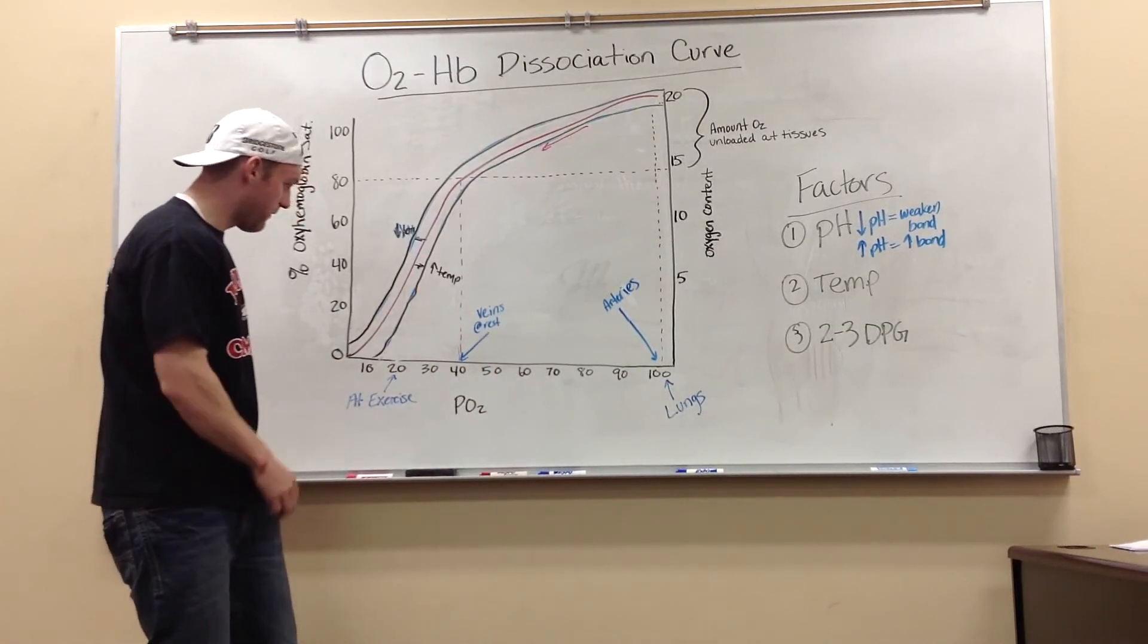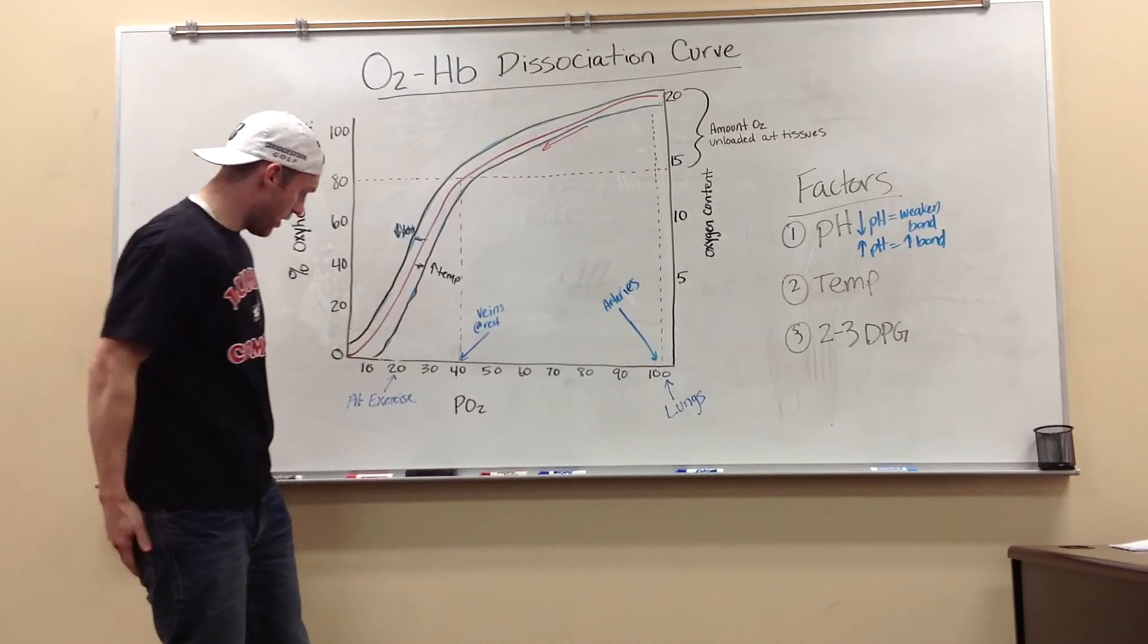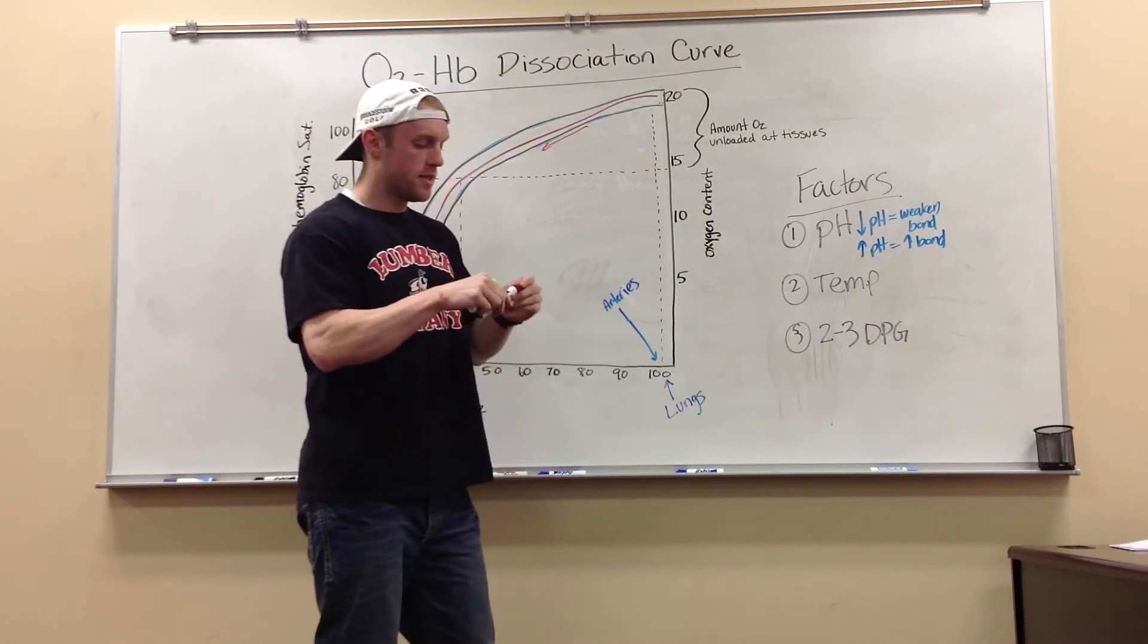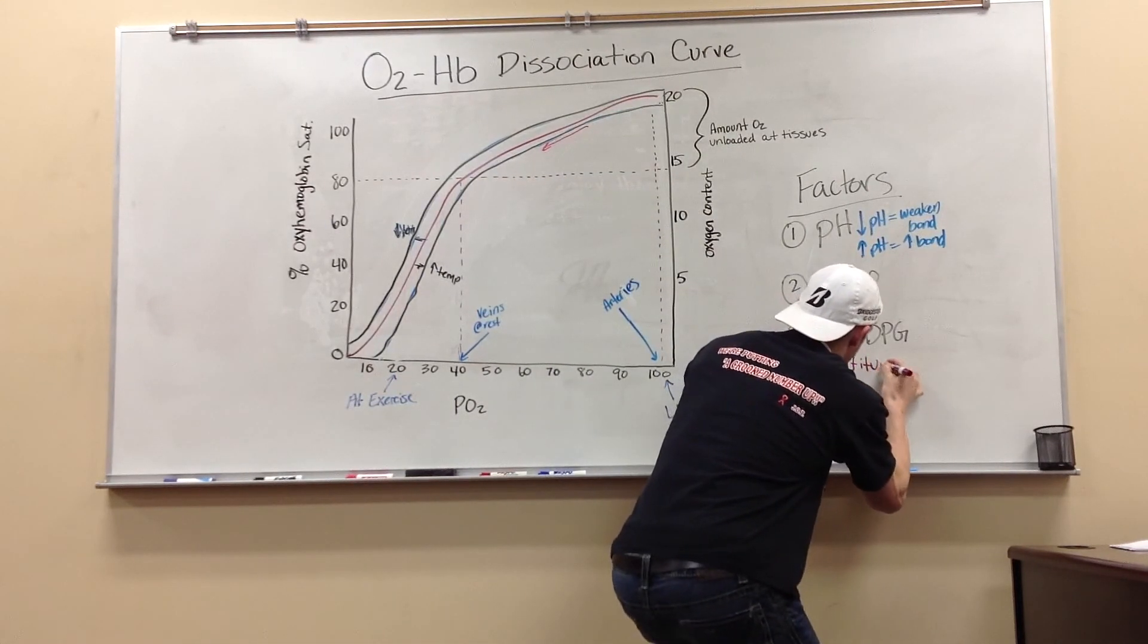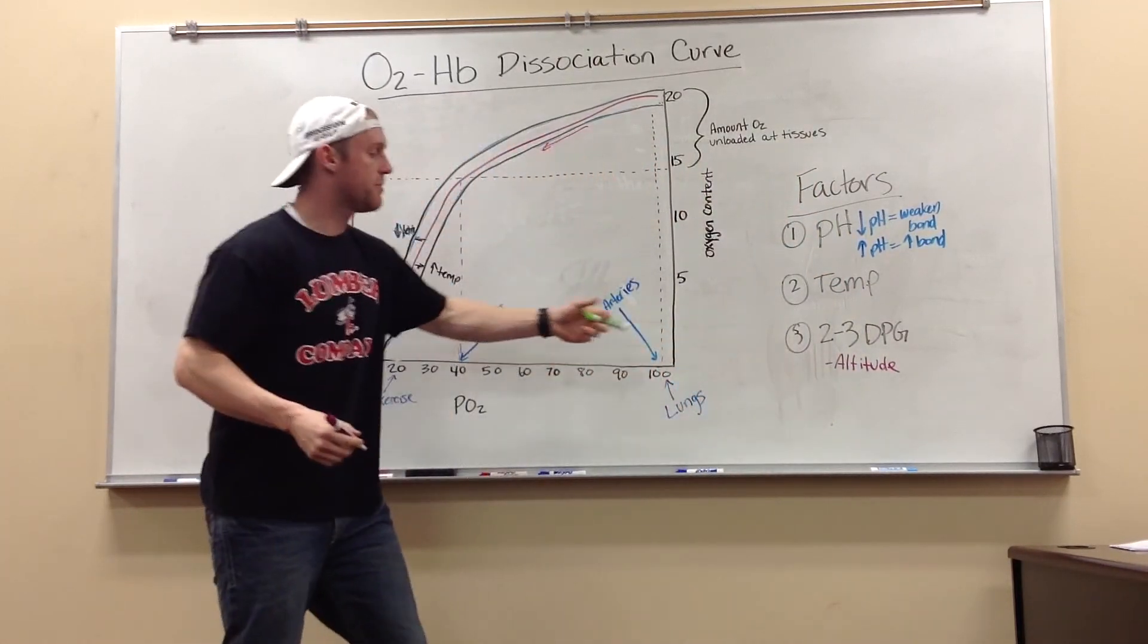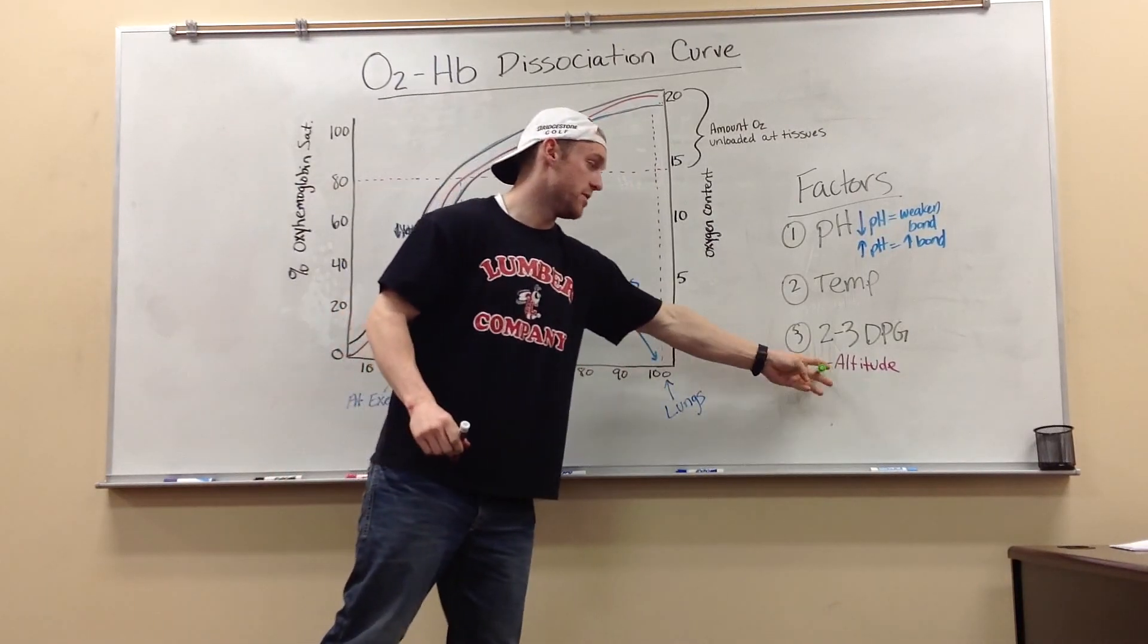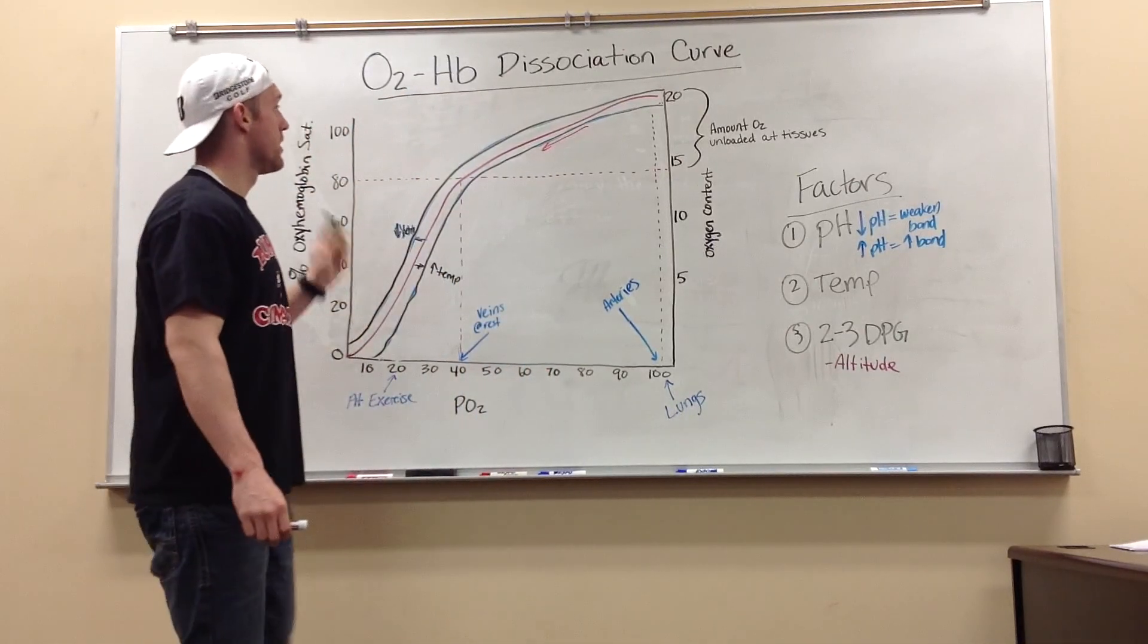Now, there's one more little factor that plays in to moving the curve, but it's not really that important, is the 2,3-DPG. It's a byproduct of red blood cells. It comes from glycolysis. But this bad boy deals mainly with altitude change. And that's the really big deal about it. It's going to be the same way. It wants to move the curve to the right, but it really doesn't have a big factor in doing that. But it comes into play more when you're at different altitudes with exercise. So that is the oxygen hemoglobin dissociation curve.